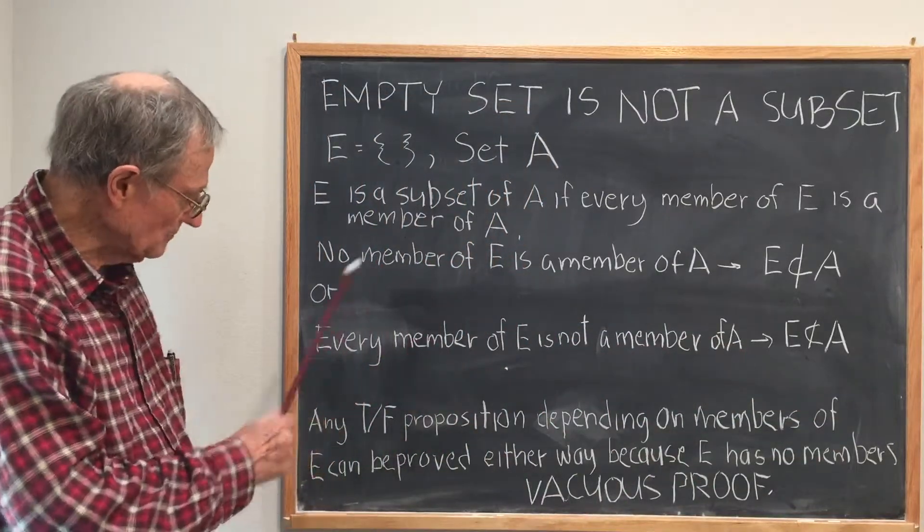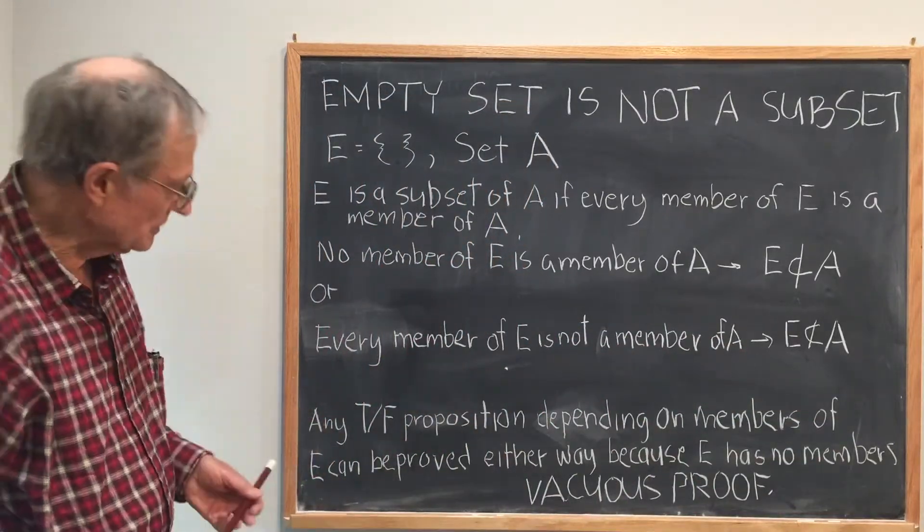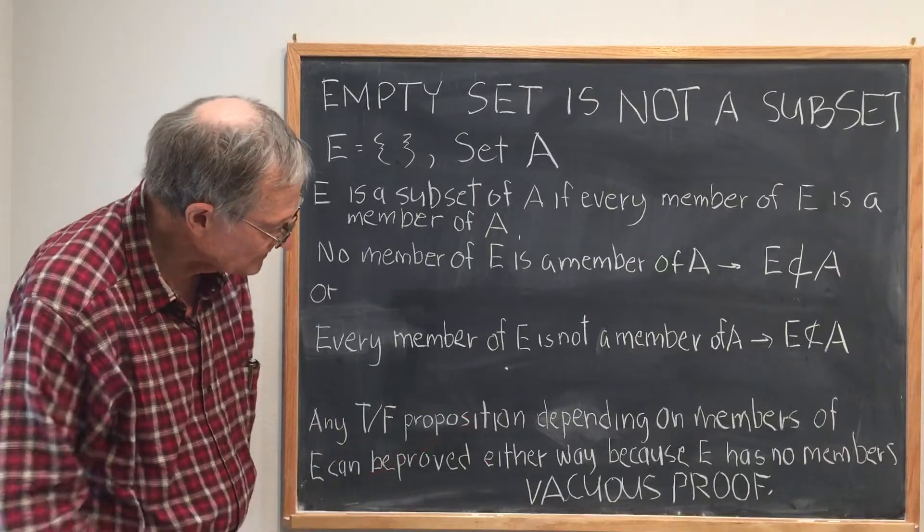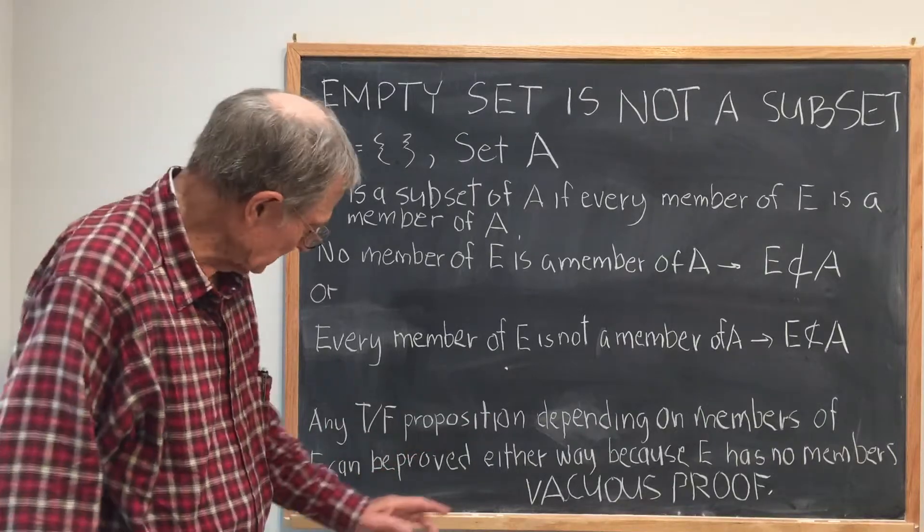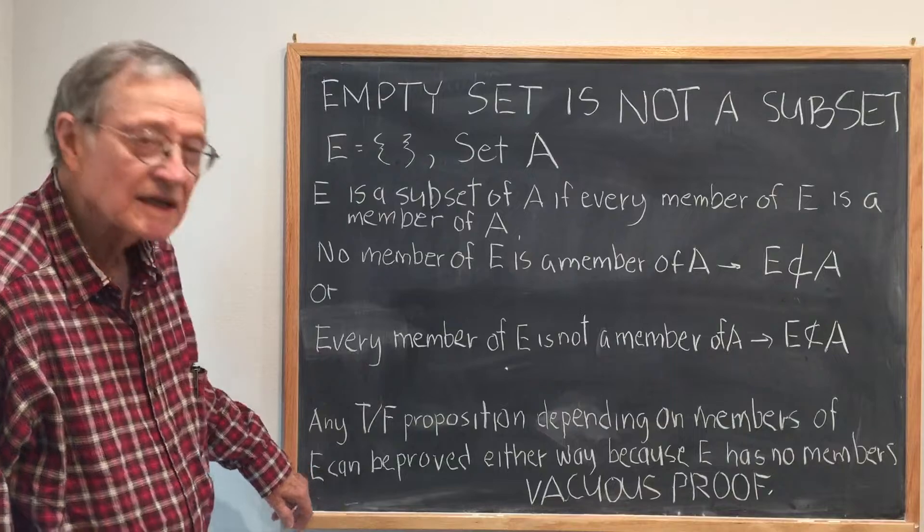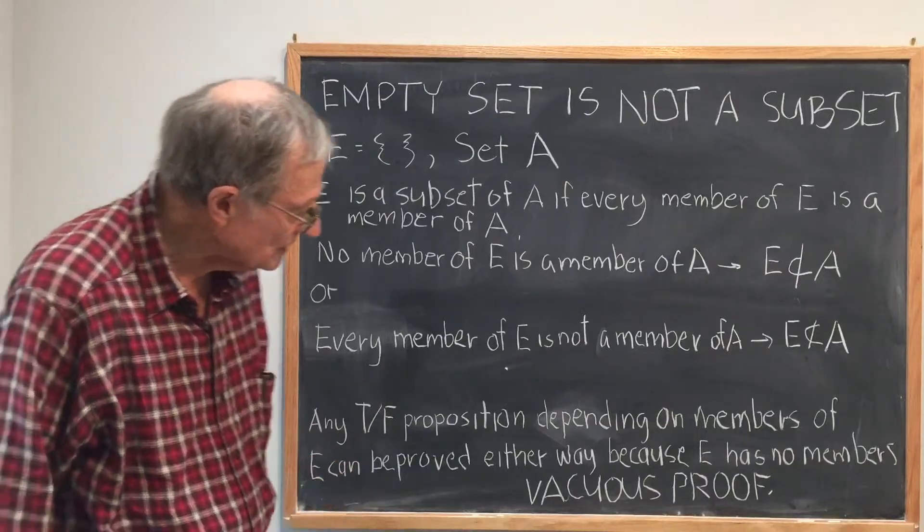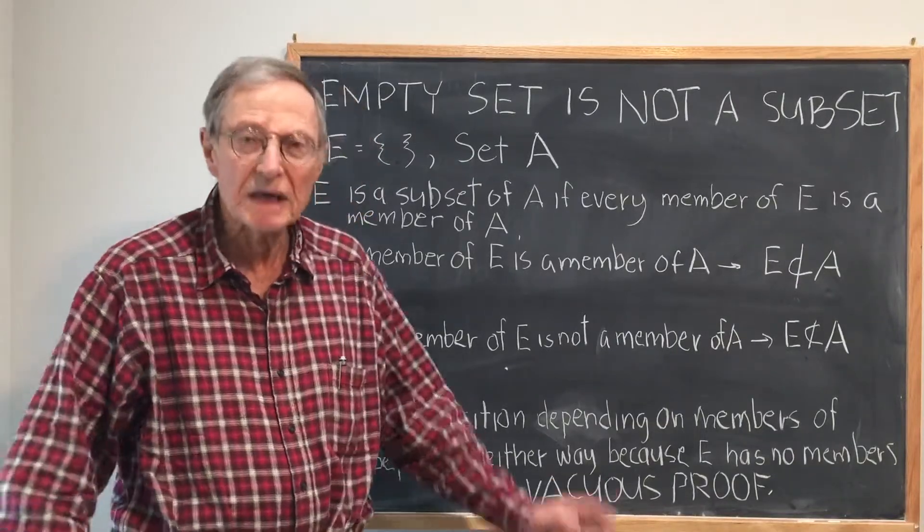This is true because E has no members. In general, any true-false proposition depending on members of E can be proved either way because E has no members.